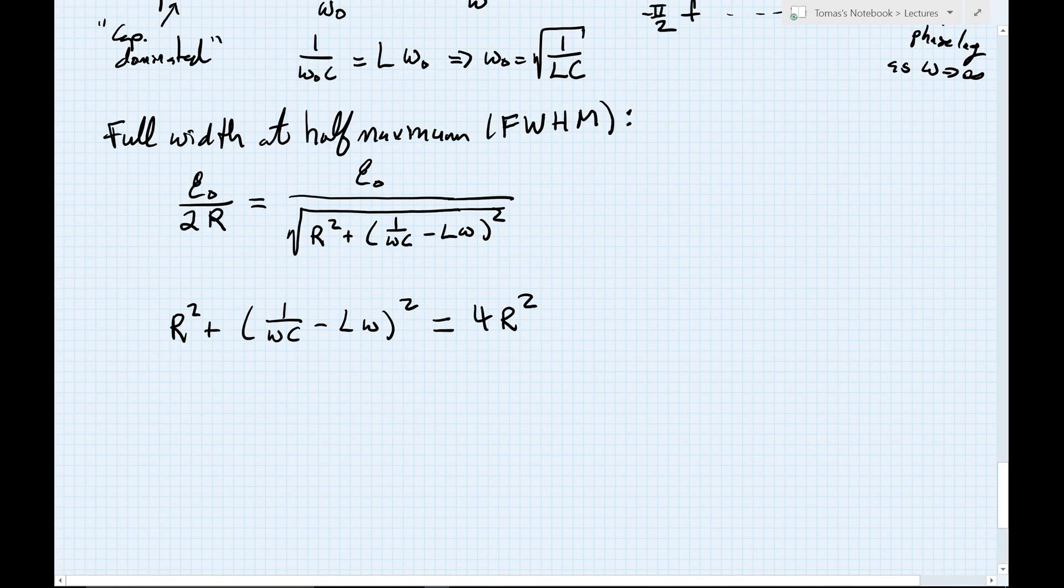Next, clearly, we want to subtract r squared from both sides, yielding 3r squared on the right. We then will be taking the square root, which will yield 1 over omega c minus l times omega equals now plus or minus, because there are two roots when we take that square root, square root of 3 from our factor of 3. And root r squared just leaves me back with r.